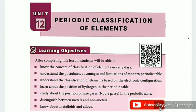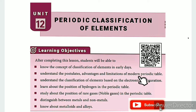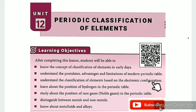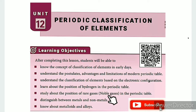In this lesson, you will learn the following objectives: know the concept of classification of elements in early days; understand the postulates, advantages and limitations of the modern periodic table; understand the classification of elements based on electronic configuration; and learn about the position of hydrogen in the periodic table.